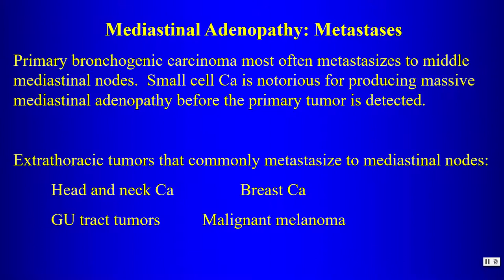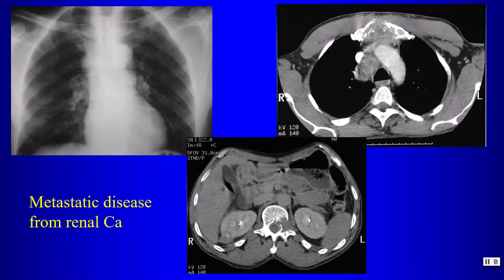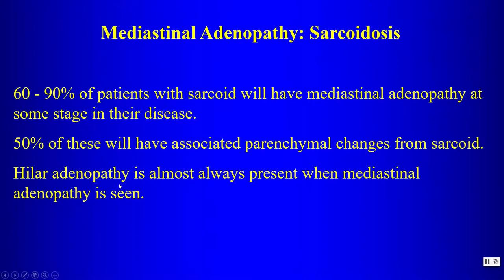Other middle mediastinal masses include lymphadenopathy from metastatic disease. Renal cell carcinoma has a propensity to metastasize to mediastinal and hilar nodes. An example shows a renal mass with bone metastases and right paratracheal lymphadenopathy on chest radiograph. Any tumor can metastasize to mediastinal nodes.